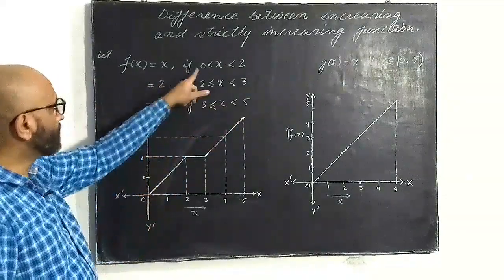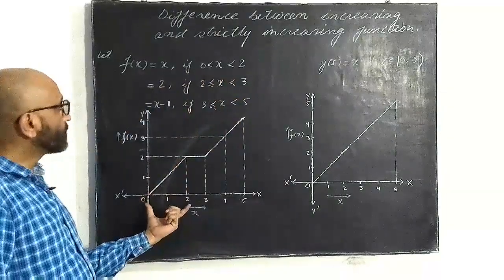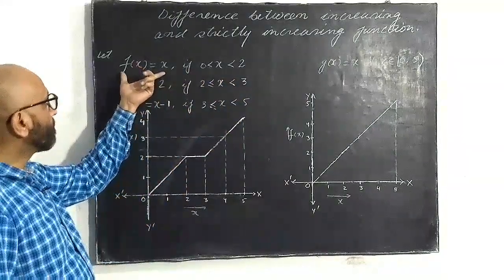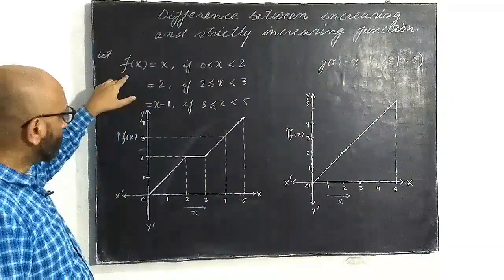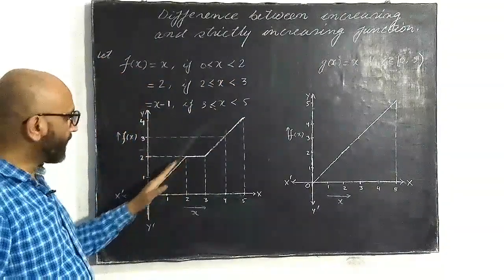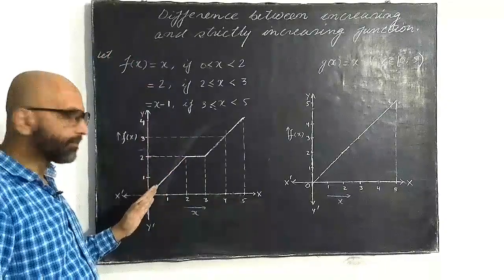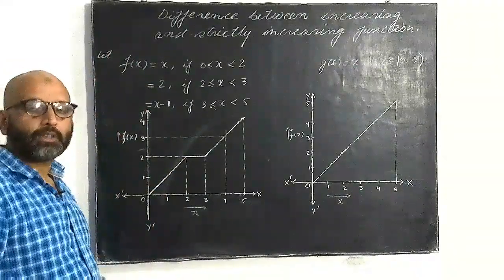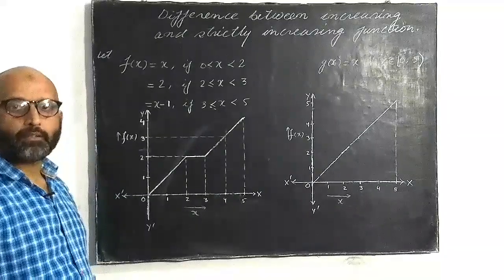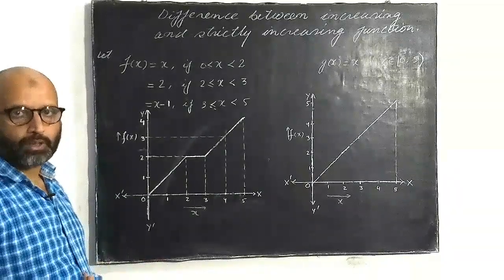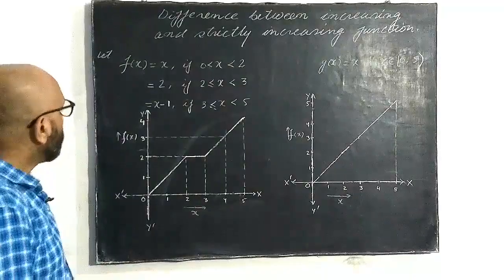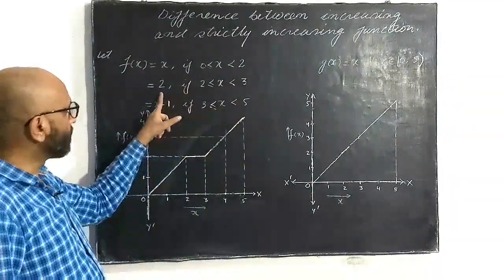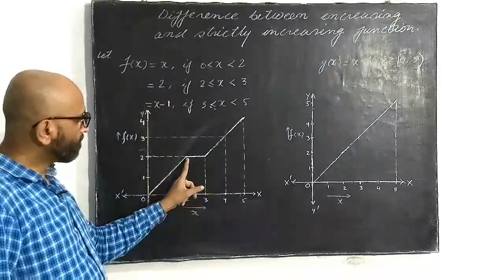This is the graph if we plot this function. From 0 to 2, the function has a graph of a straight line making equal angles with the x-axis and y-axis, since y = x gives a straight line making equal angles with both axes. After that, from 2 to 3, this is a constant function, so the graph will be parallel to the x-axis.